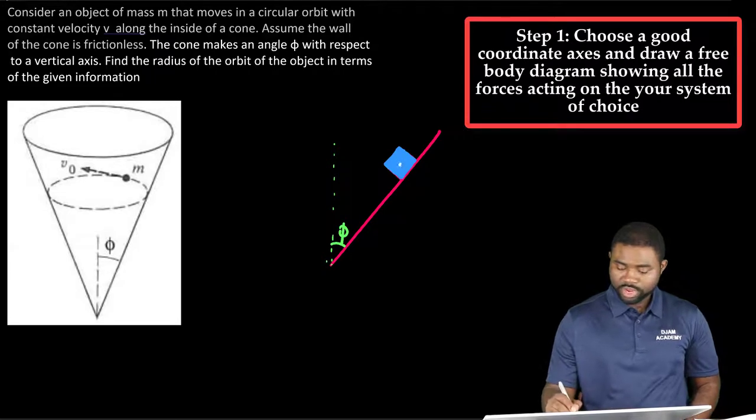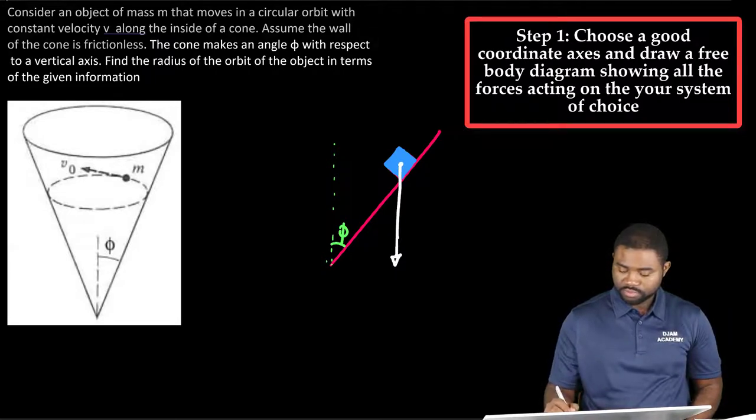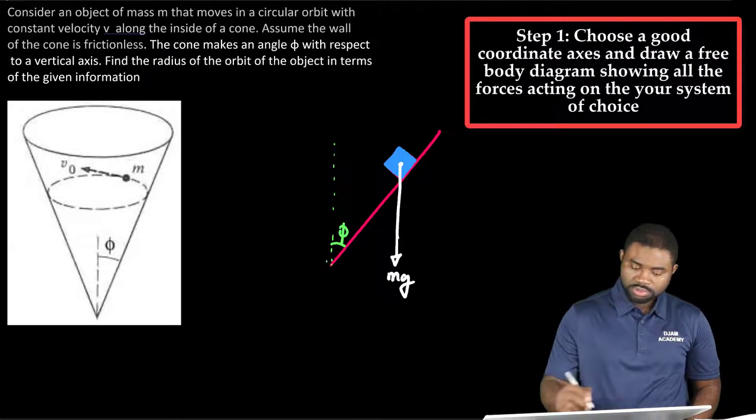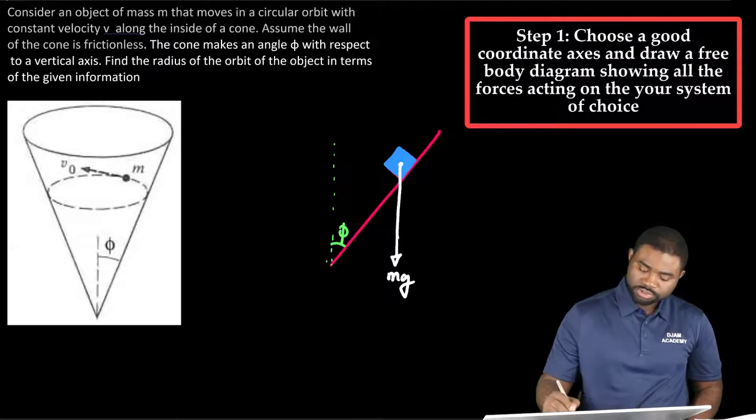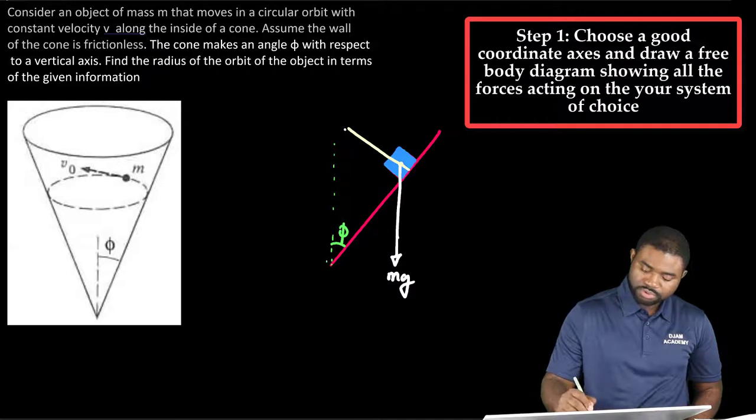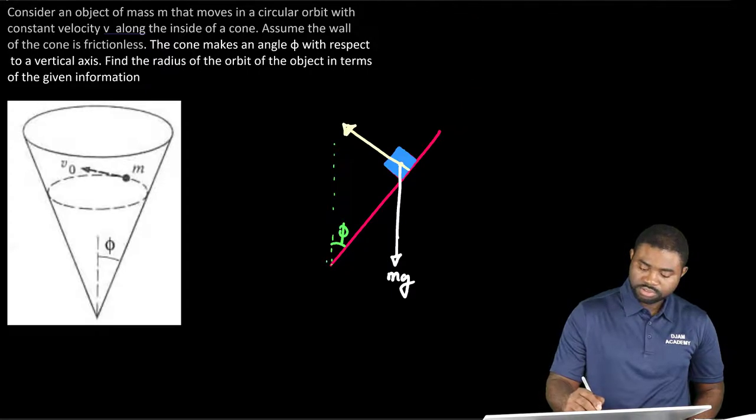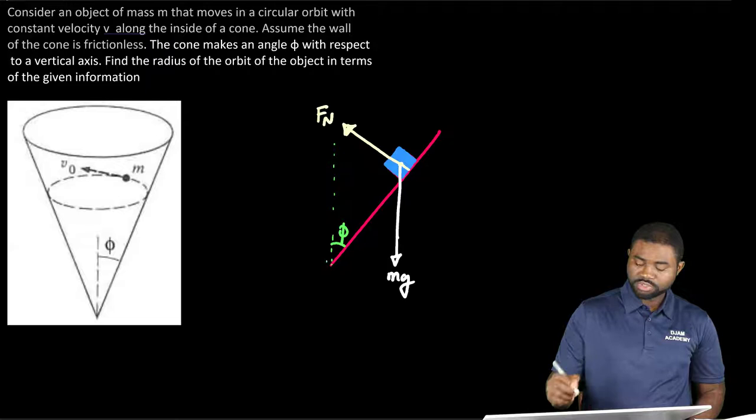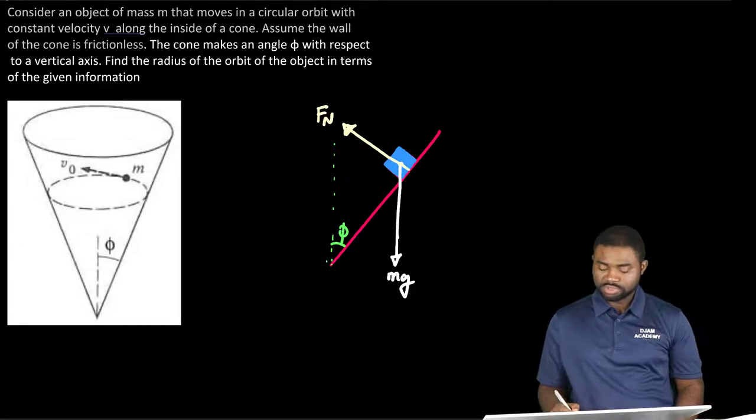We know that the weight acts vertically downwards. The normal force is always perpendicular to the surface. Take note about that. The normal force is always perpendicular to the surface.